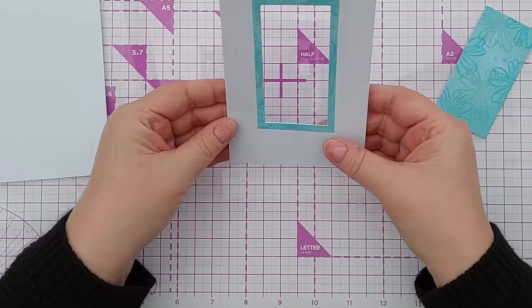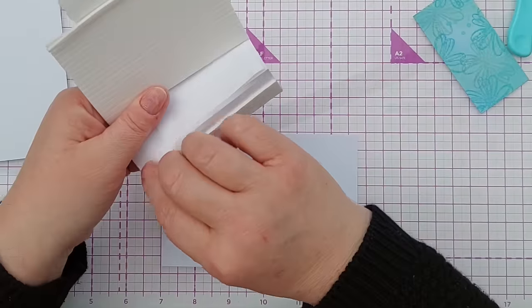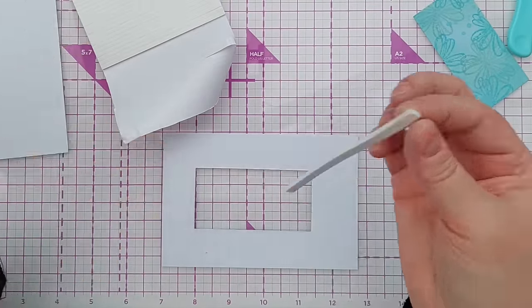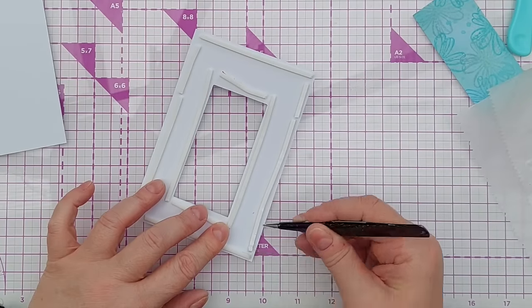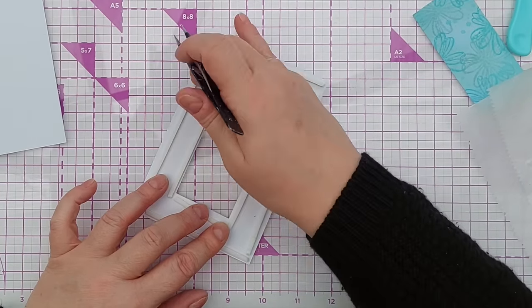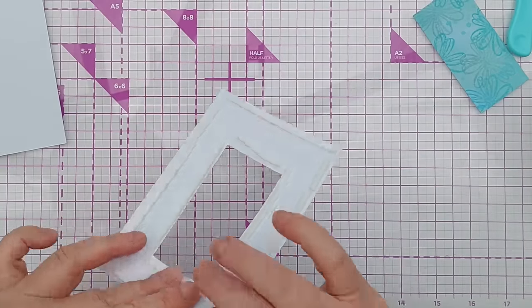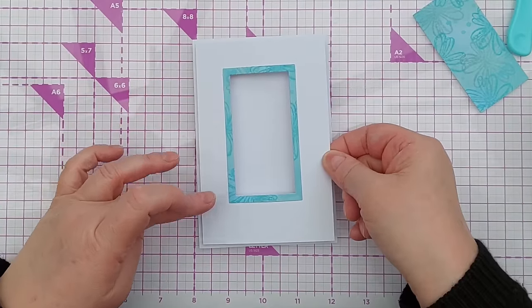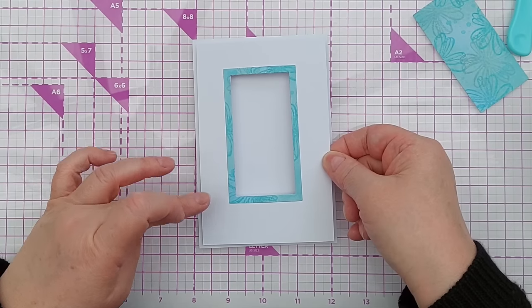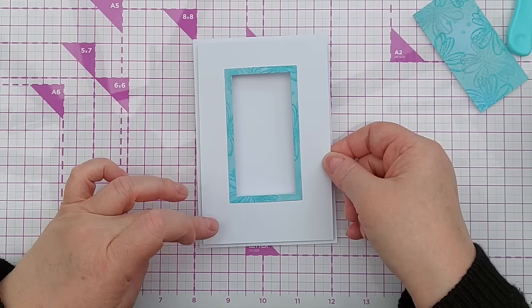That looks about right to me. I want to add this to my card blank, so I'm going to take some craft foam because I want some dimension. I've taken the release paper off the back of the foam, so now I can add this to my card blank.